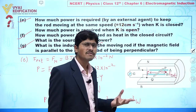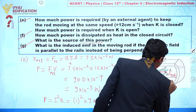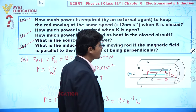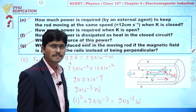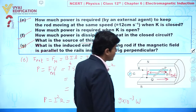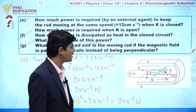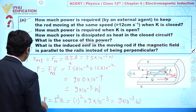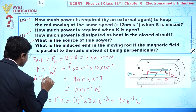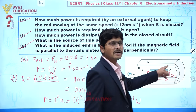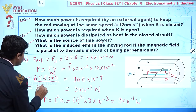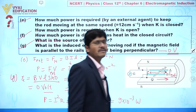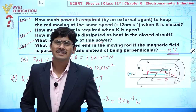Part (g): What is the induced EMF in the moving rod if the magnetic field is parallel to the rails? If B is parallel to the rails, then B and V are in the same direction, meaning the angle between them is zero. The induced EMF = BVL sin θ = BVL sin 0° = 0. So when the magnetic field is parallel to the rails, the induced EMF is zero volts.